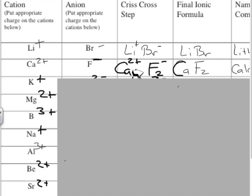And it's good form to write the ionic compound without the charges. So, that's the point of the final ionic formula, is rewrite it with the subscripts that you crisscross, but not the charges up here. So, it becomes calcium fluoride.